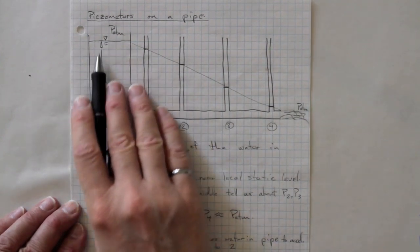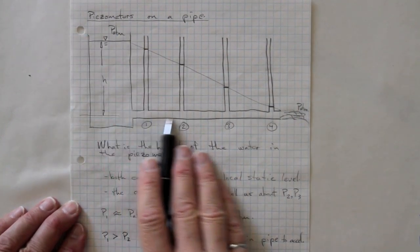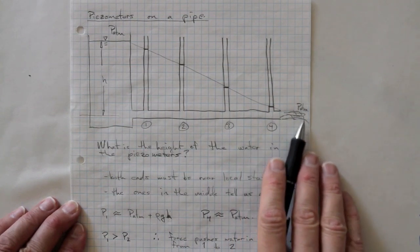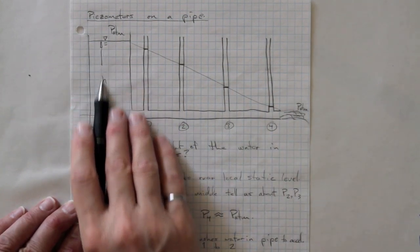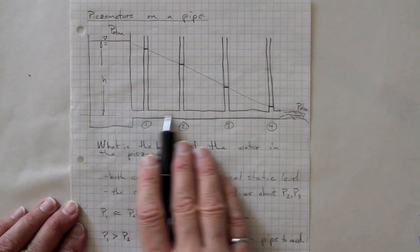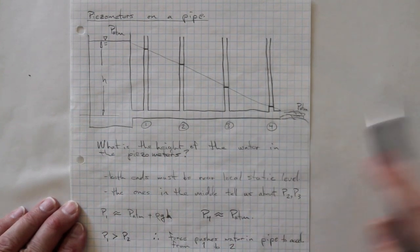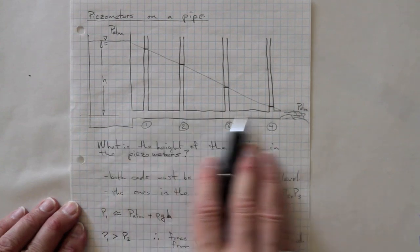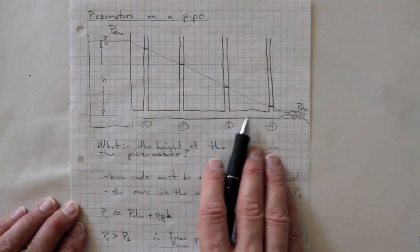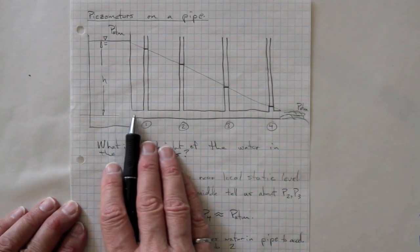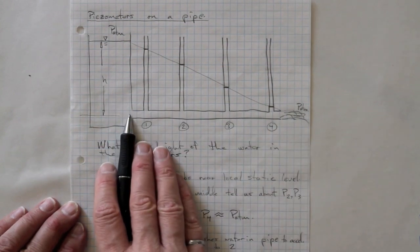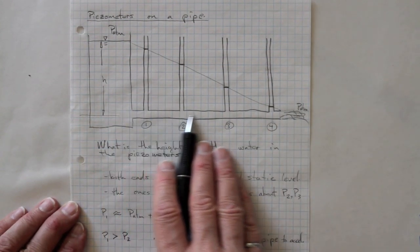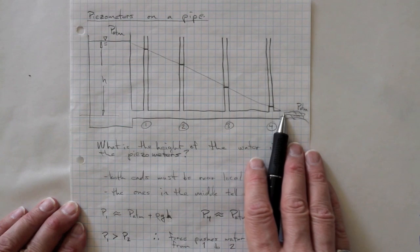If we had a reservoir like this open to atmosphere with a pipe coming out of it and nothing to block the flow, then water is going to flow down through here, out through the pipe, and out onto the ground out here. There's going to be friction, viscous shear, resisting the motion in the pipe. So the result is there's going to be a pressure drop. The pressure will be quite high here and drop down to atmospheric pressure at the exit.